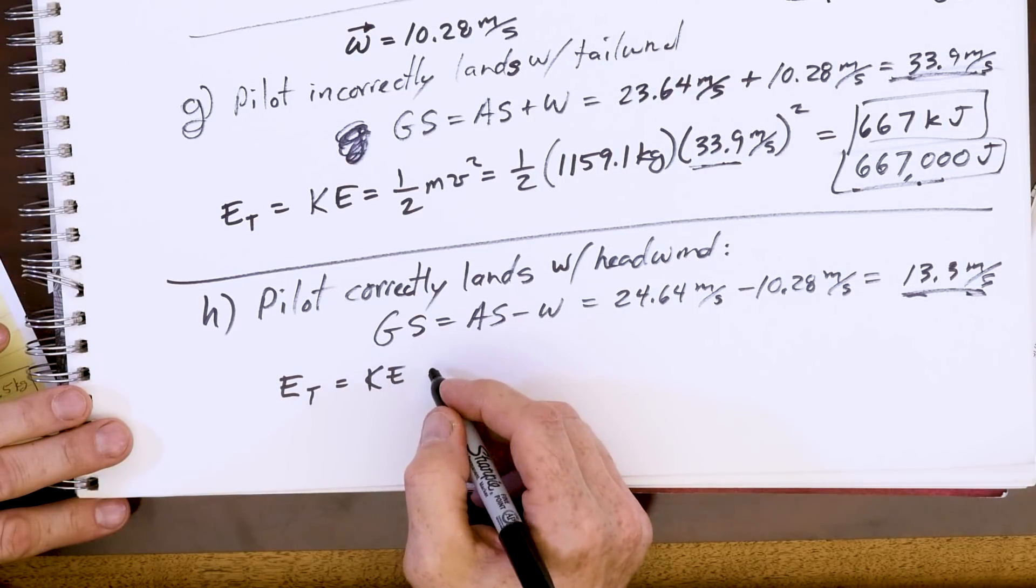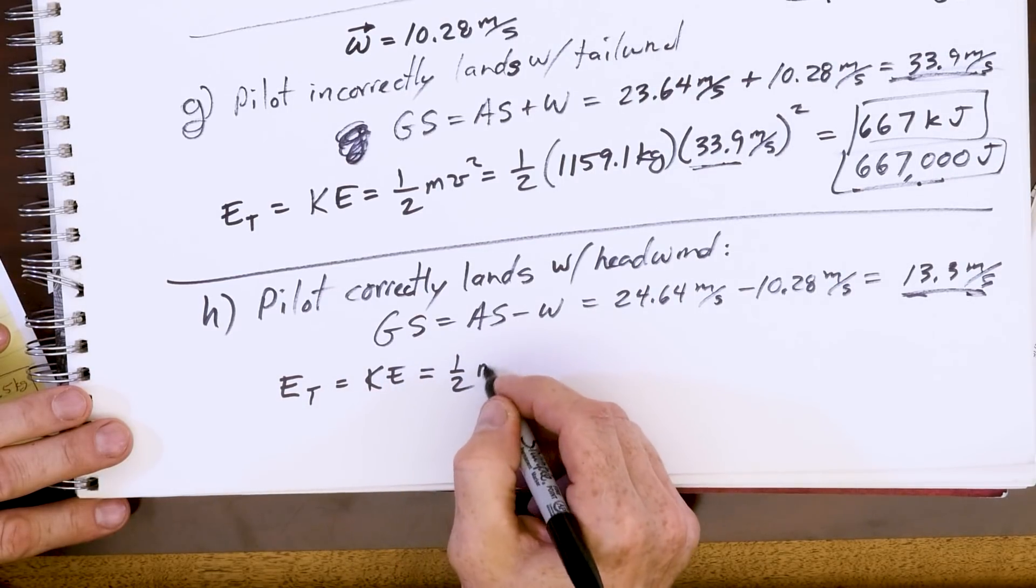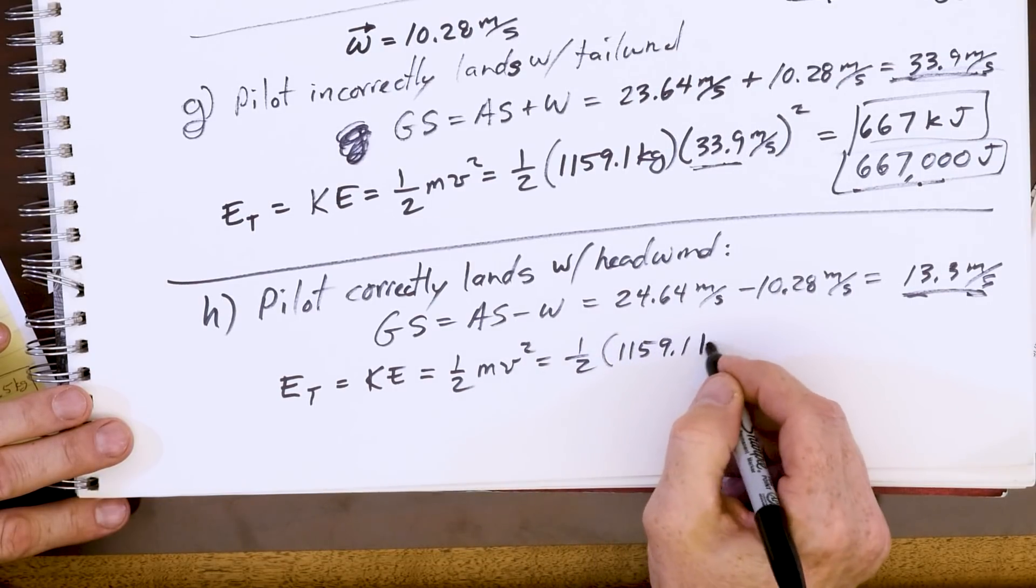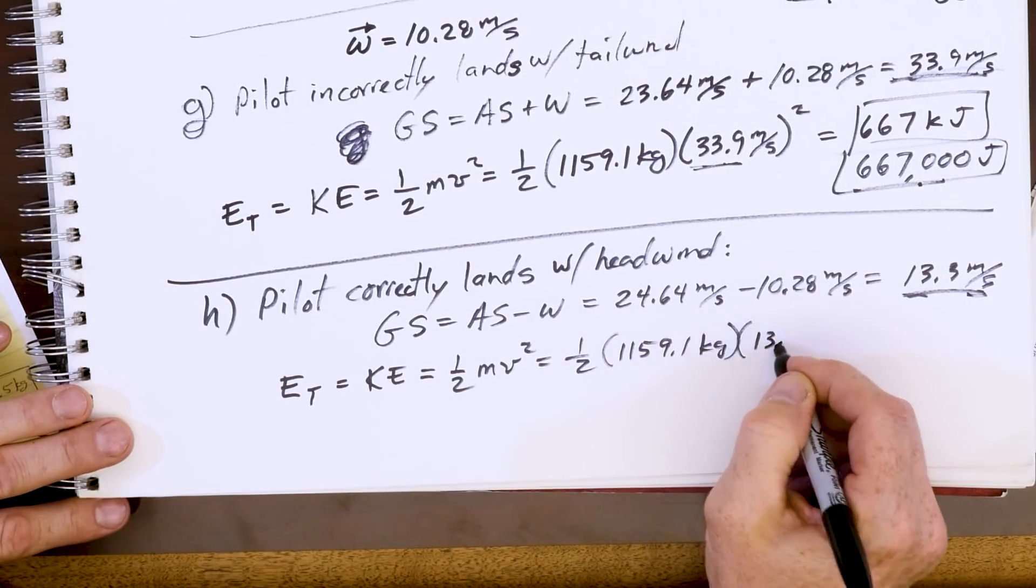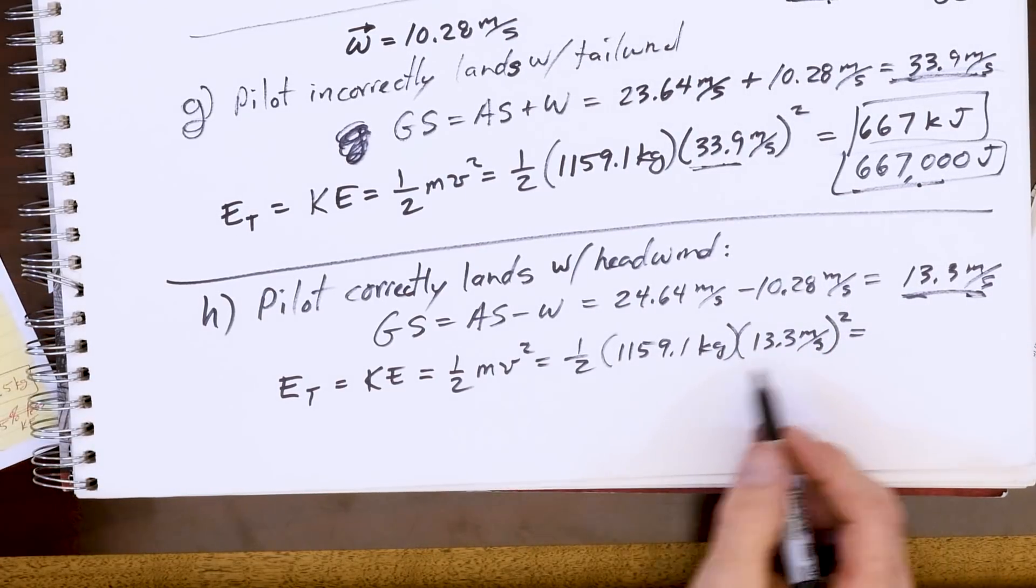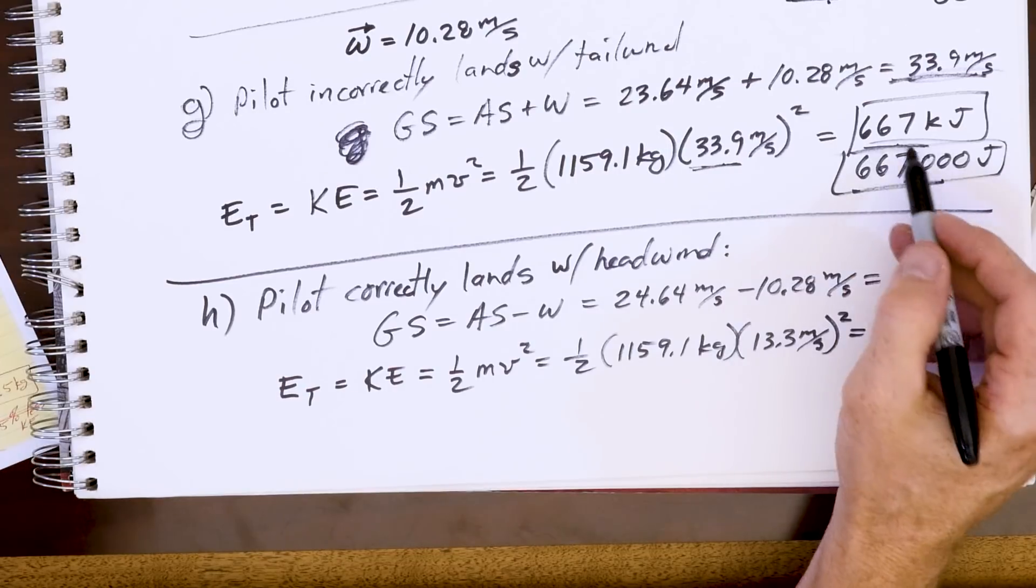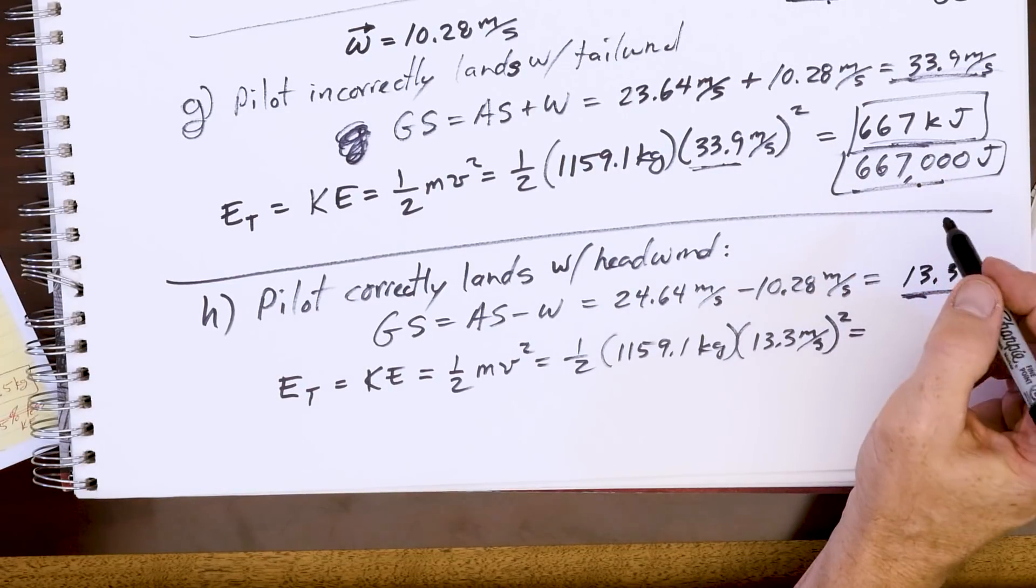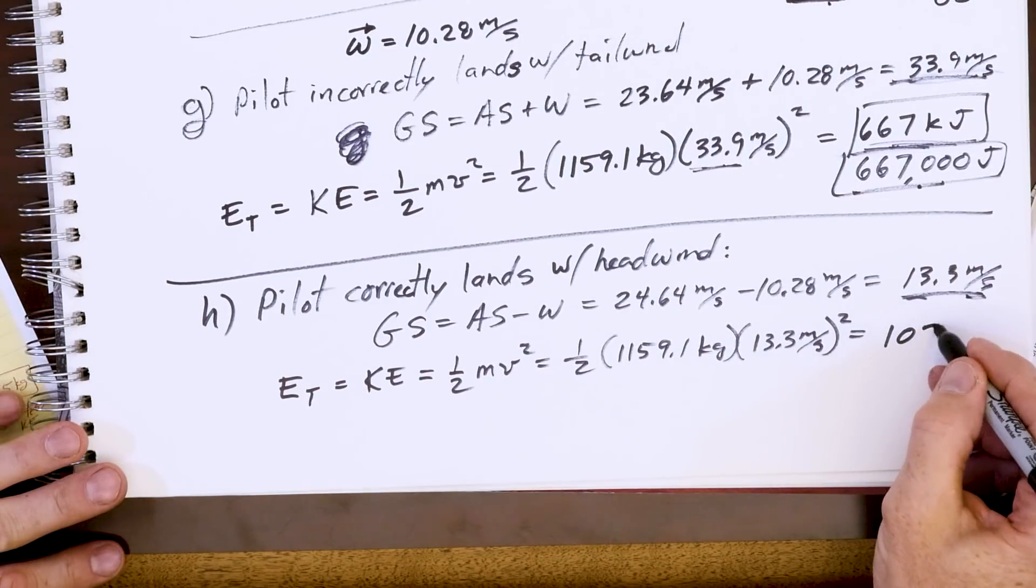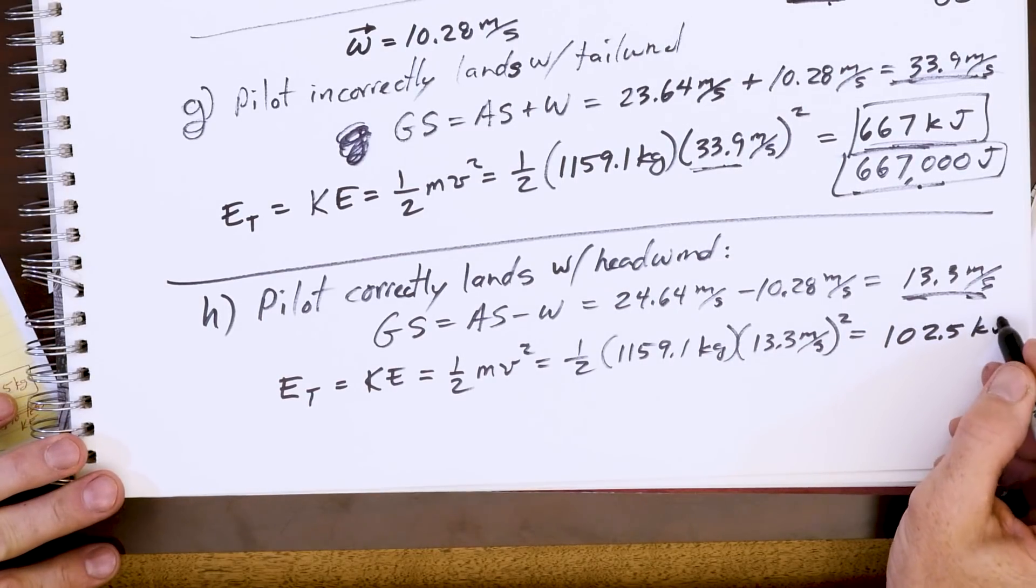Let's get our total energy now. Our kinetic energy for the better pilot is 1/2 mv²: 1/2 times 1159.1 kilograms times 13.3 meters per second. Pause the video again and crunch this number and compare to this guy - it should blow your mind. I got 102.5 kilojoules.